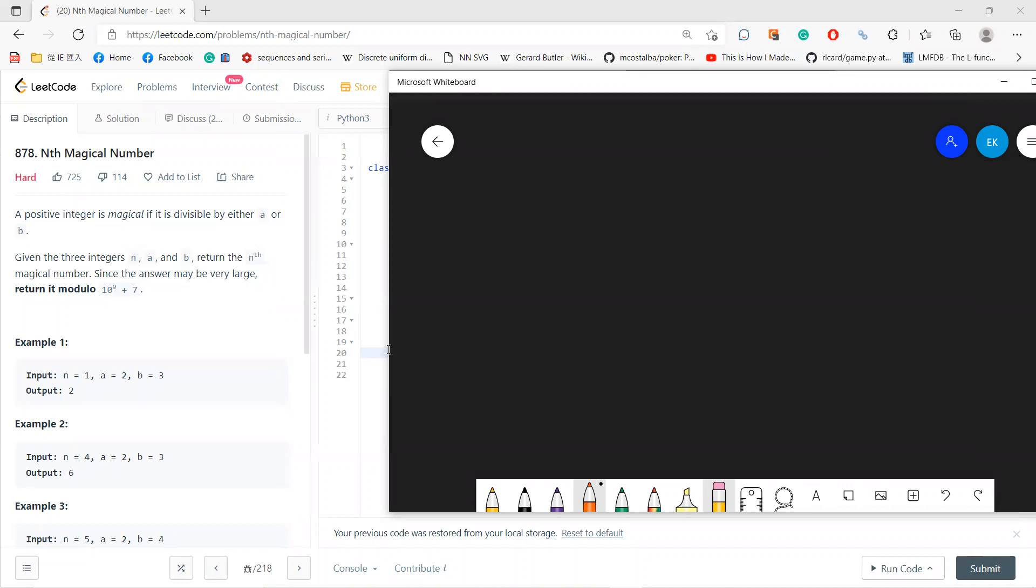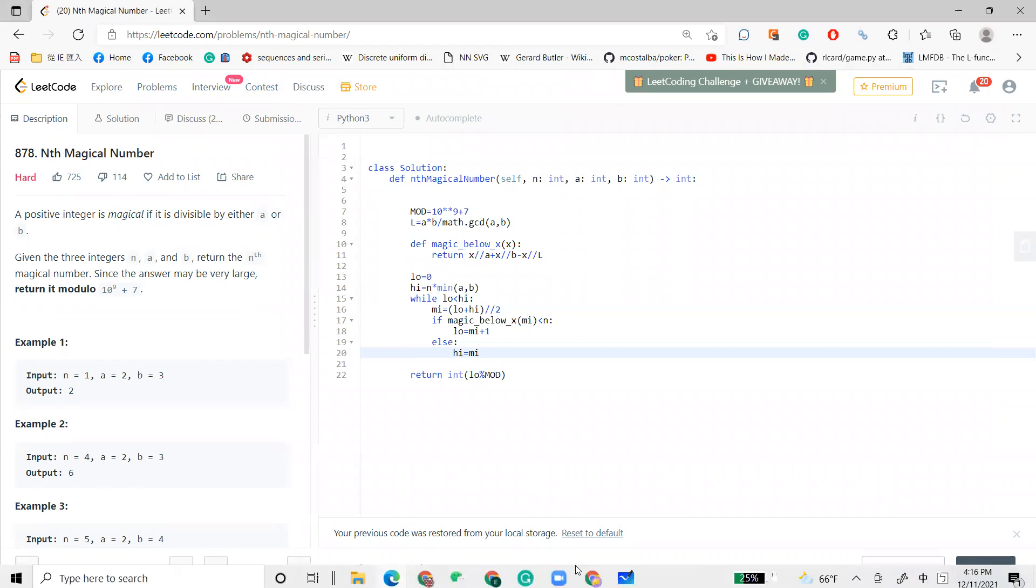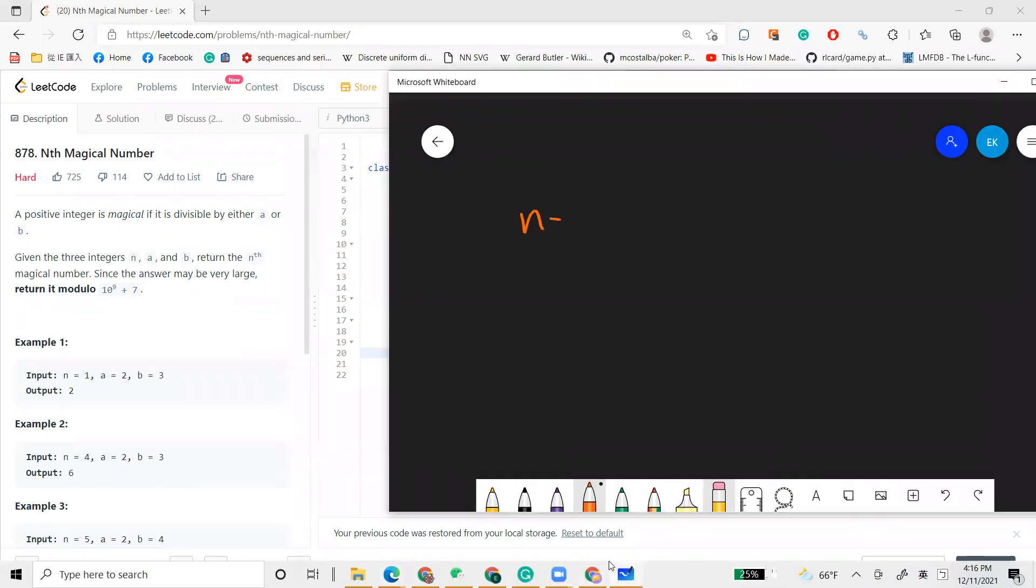And given three integers n, a, b, you need to return the nth magical number. Since the number is very large, return modulo 10 to the 9 plus 7. Okay, 10 to the 9 plus 7 is not important. So for example, let's say n equals 1 and a is 2 and 3.